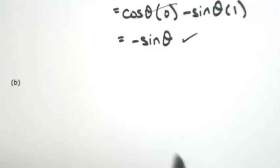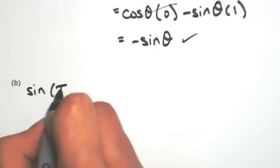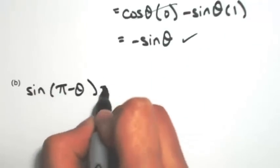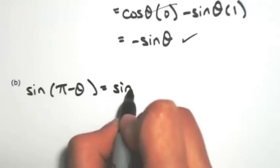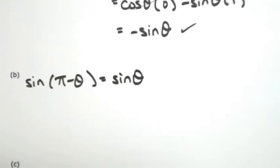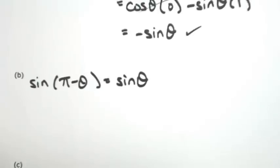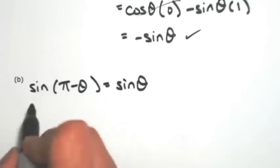Let's establish another one. Let's say the sine of pi minus theta. Let's show that that's the exact same thing, it's just simply sine of theta. So again, pick a side that has a little more involved, which is the left side.